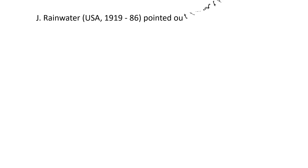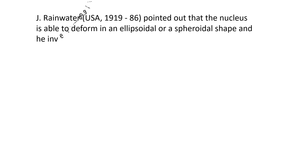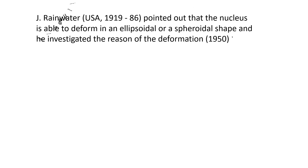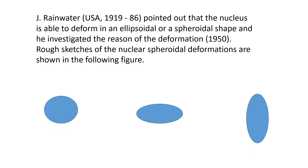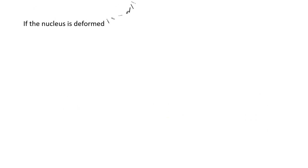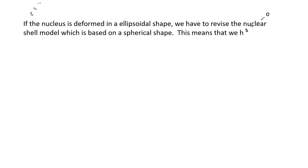Rainwater pointed out that the nucleus is able to deform into an ellipsoidal or a spheroidal shape, and he investigated the reason for this deformation. Rough sketches of these nuclear spheroidal deformations are shown here: this first case is without deformation, and the other two cases show different types of deformation.